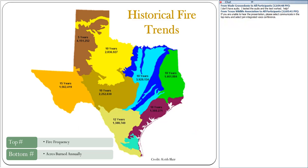Here's a look at the historic fire trends map created by Keith Blair. The top number is fire frequency — how often a single plot of land would burn — and the bottom number is the acres that burned annually. You can see that fire historically was a very important tool used to maintain our lands as we used to know them.